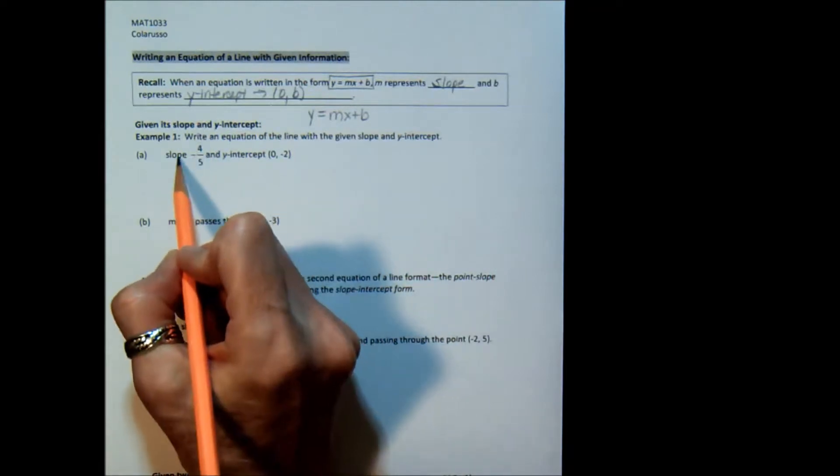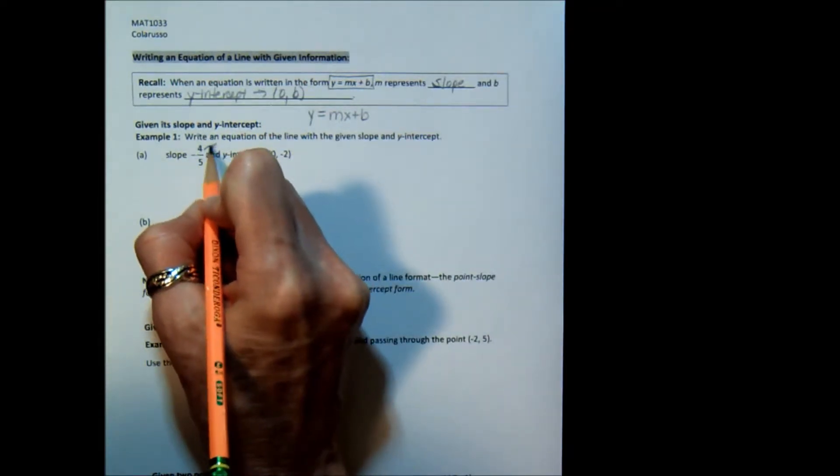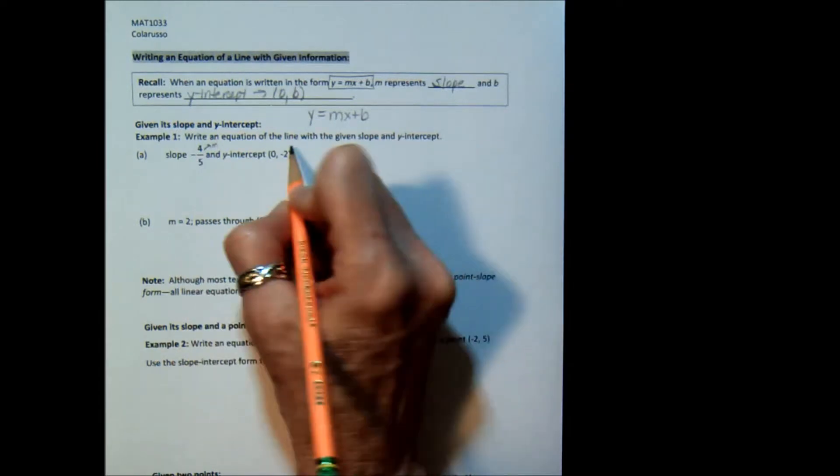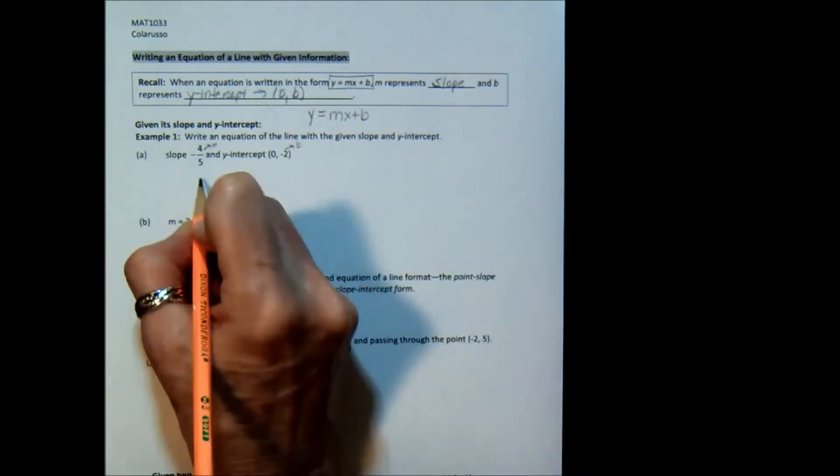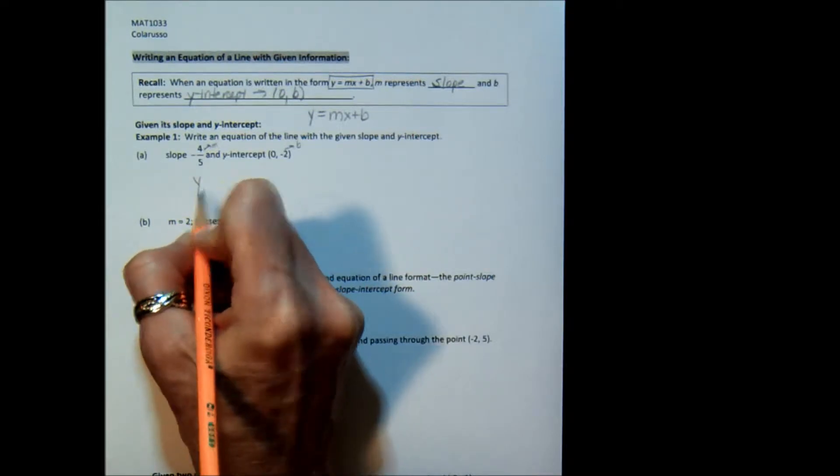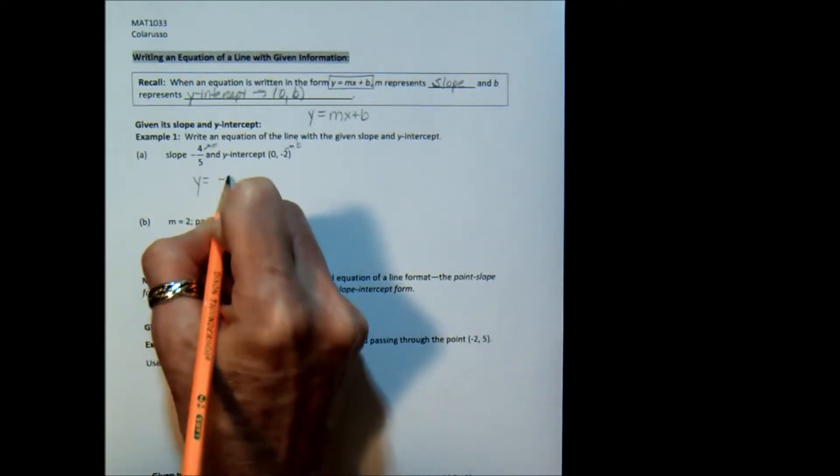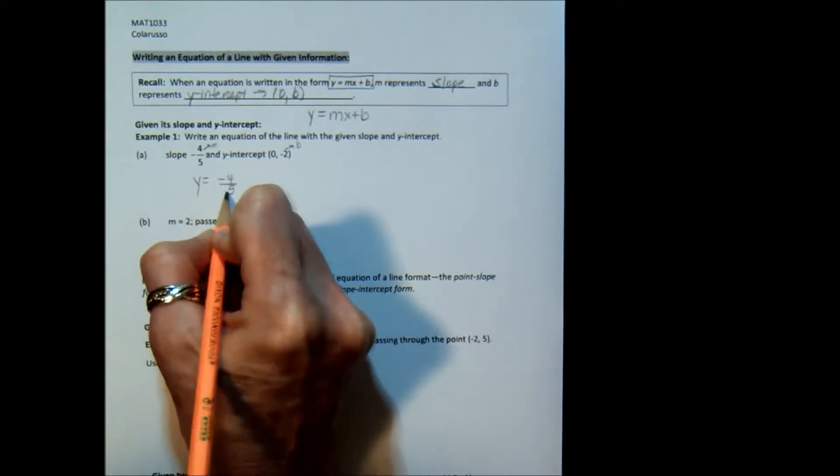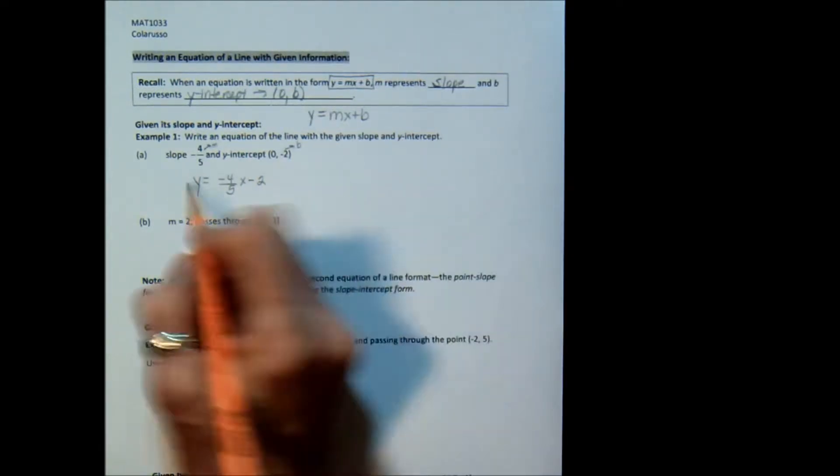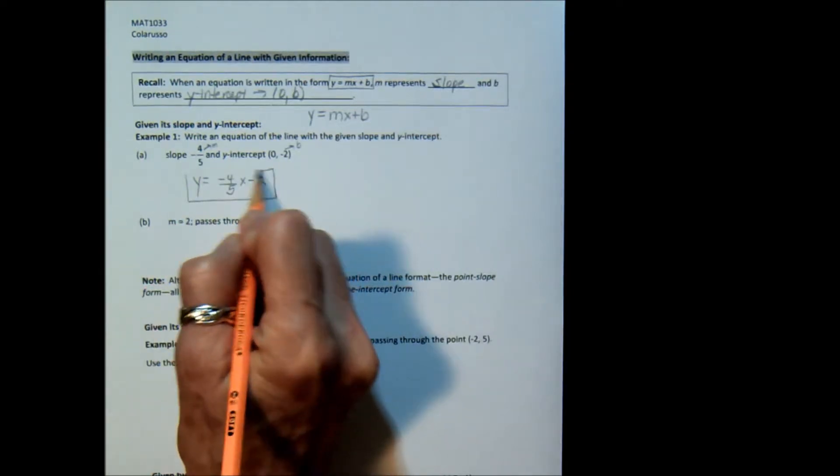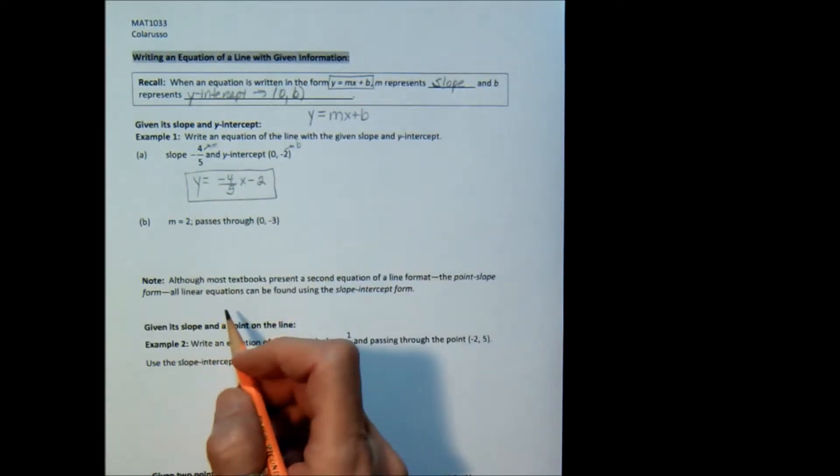So if I'm given the slope, then I know that that is m. And if I'm given the y-intercept, I know the number part of that is b. So all I have to do is plug that into my equation. y equals the m that you are given times x plus negative 2, which is the same thing as just minus 2. And I have my equation. So it couldn't get any easier than that.